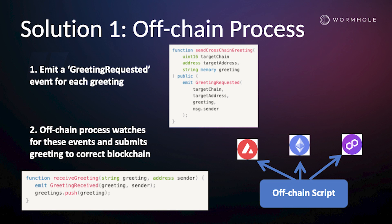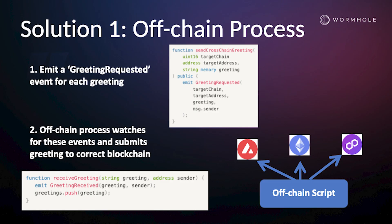So here's a first attempt. One way you could do this is you just emit an event on the same blockchain, and then you have an off-chain process that watches for that event. You write a little script that watches the blockchain, watches for the event, and then goes and does the action on the other blockchain — submits something, and causes an event to be emitted. You call that your Hello Wormhole app. But this solution makes us write a script, and we don't want to do that.